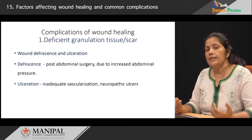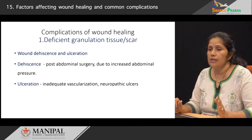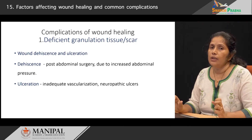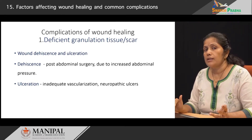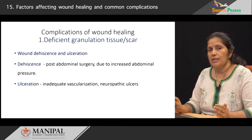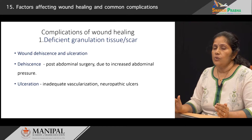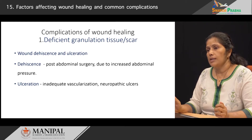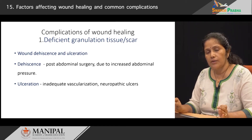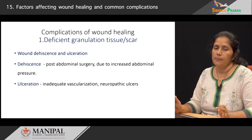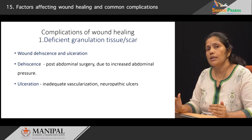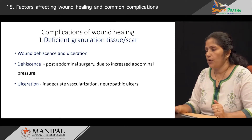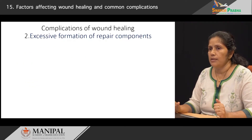Ulceration usually occurs when there is inadequate vascularization — not enough vascularity for wounds to heal. It can also occur when the patient has neural problems, as seen in leprosy or spinal cord injury patients. These are called neuropathic ulcers, where decreased sensation causes the patient not to realize repeated injury, so such ulcers will not heal quickly.